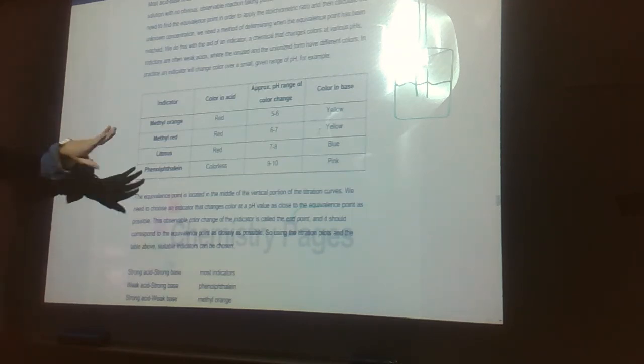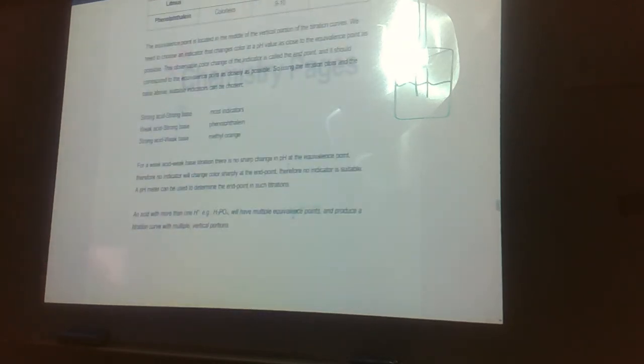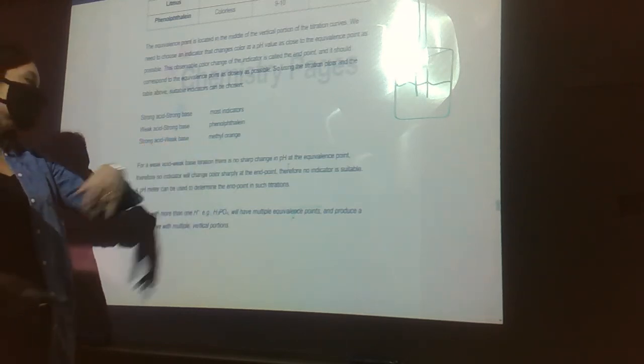Strong acid strong base, you can use almost any indicator you want because that color change is going to happen somewhere in the middle. You'll see it happen. Weak acid strong base, phenolphthalein. That's why we used it for our vinegar and hydrochloric acid titration in Chem 1A. Strong acid weak base, methyl orange.